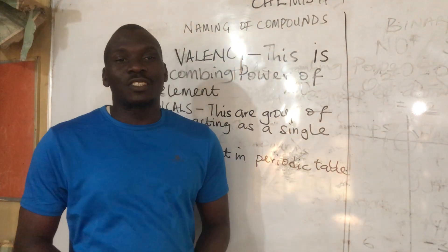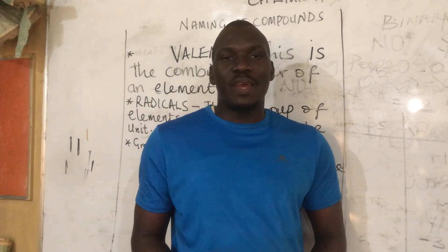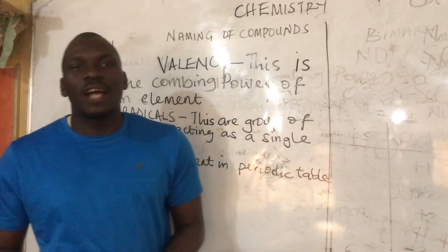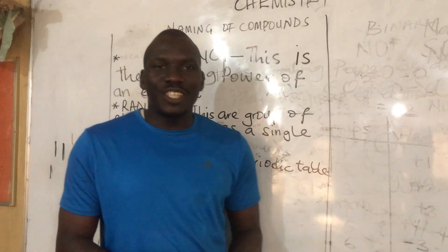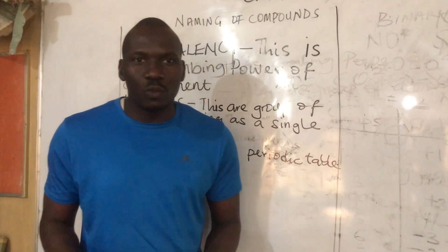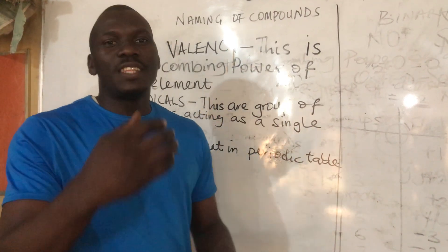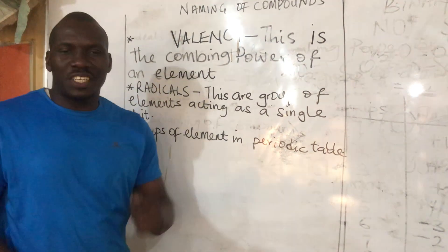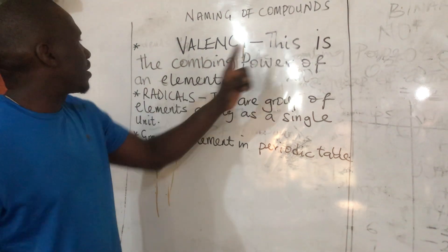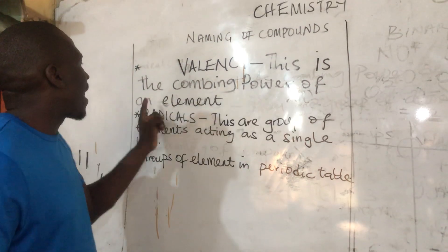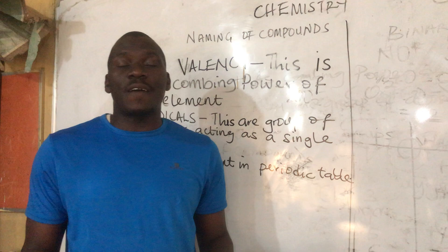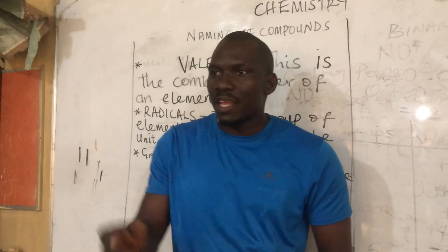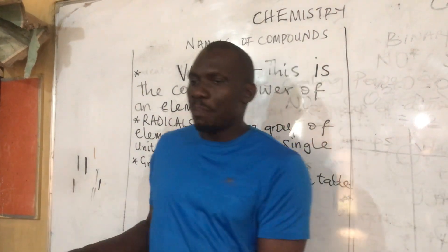In our previous sections, we discussed the first 20 elements of the periodic table, starting from hydrogen to calcium. Now we want to start naming the elements. First, valency. What is valency? Valency is the combining power of an element — what every element uses in combining with other elements to form compounds.